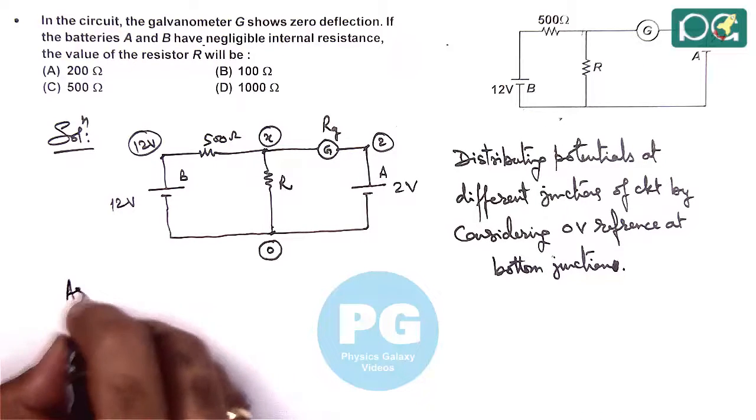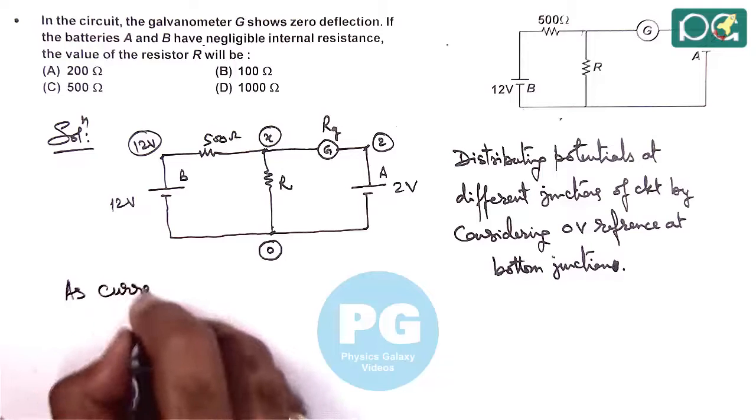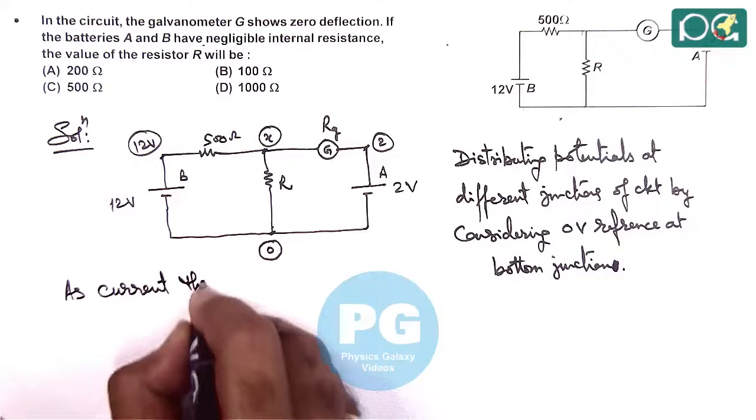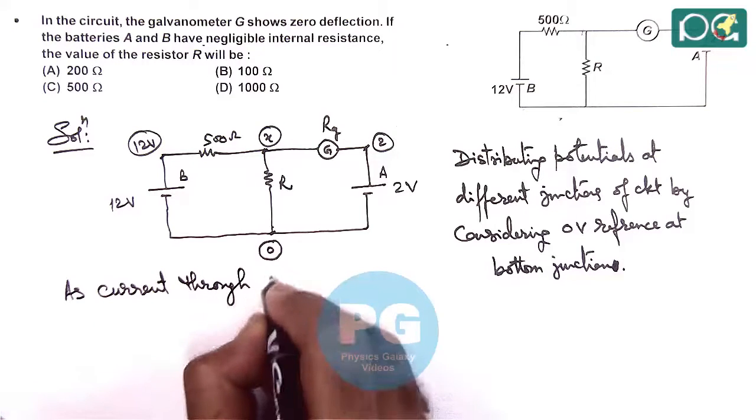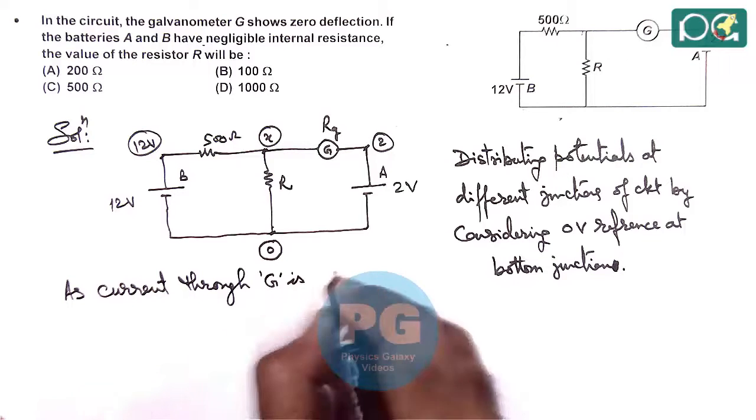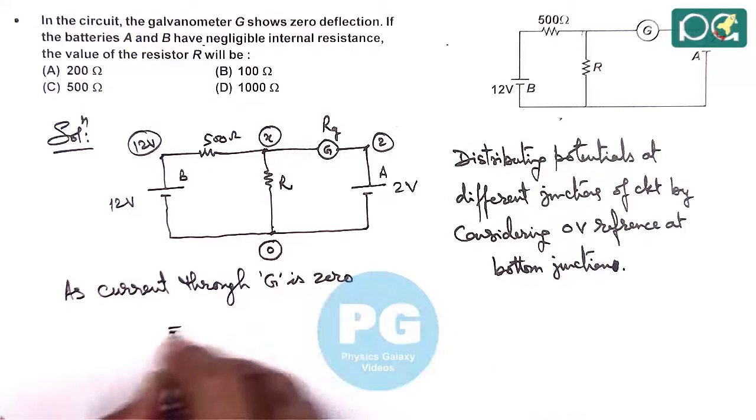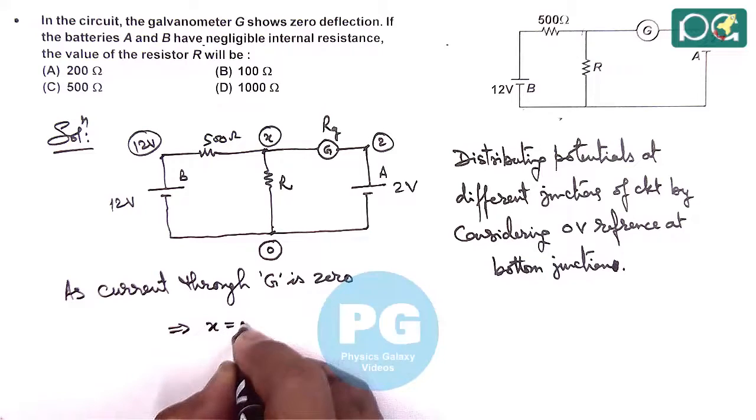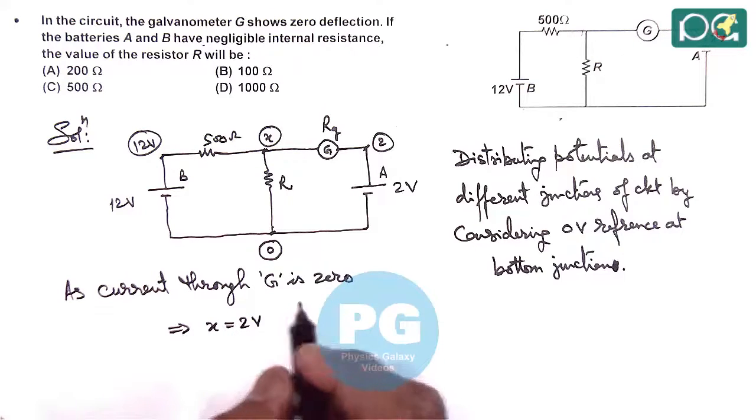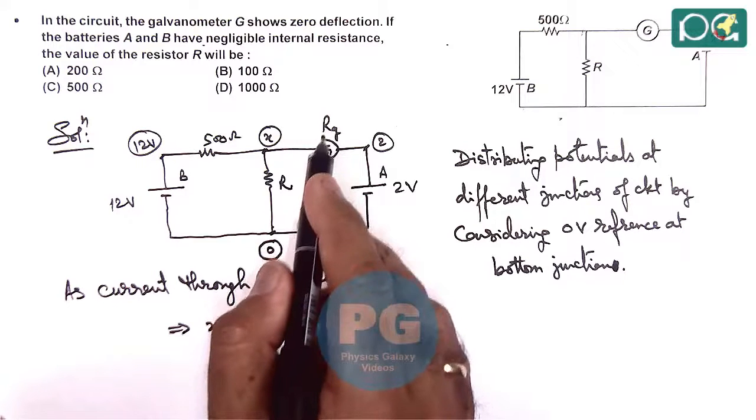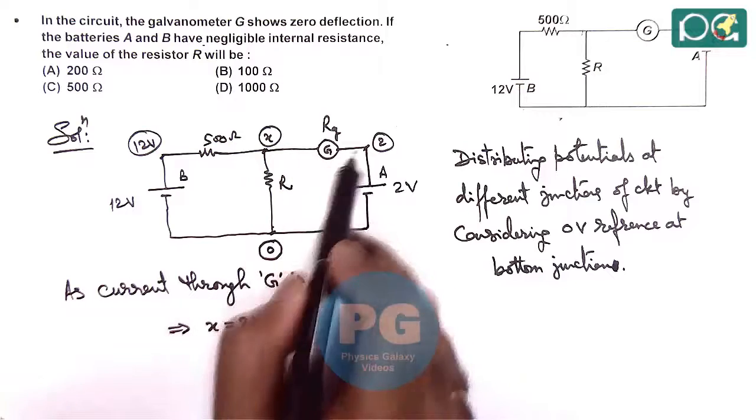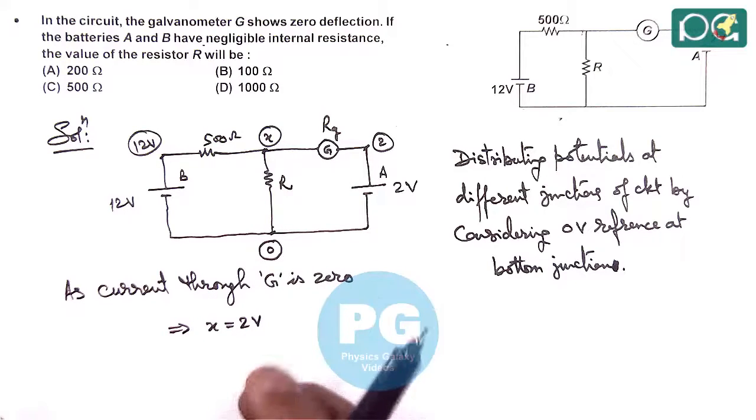In this situation, as current through the galvanometer is zero, this implies we can directly write X equals 2 volts. Because if the current through resistance RG is zero, the potential difference across the galvanometer should also be zero.